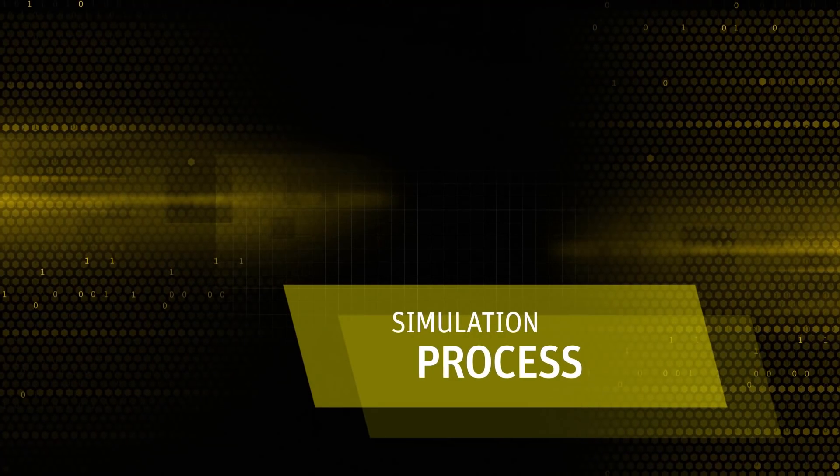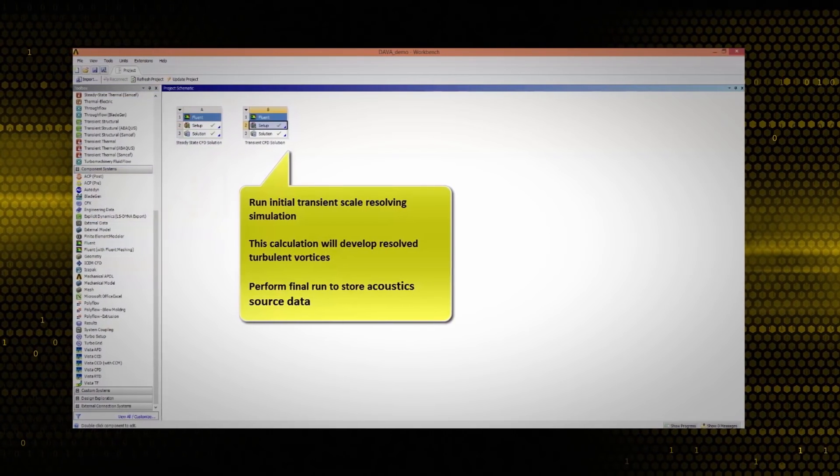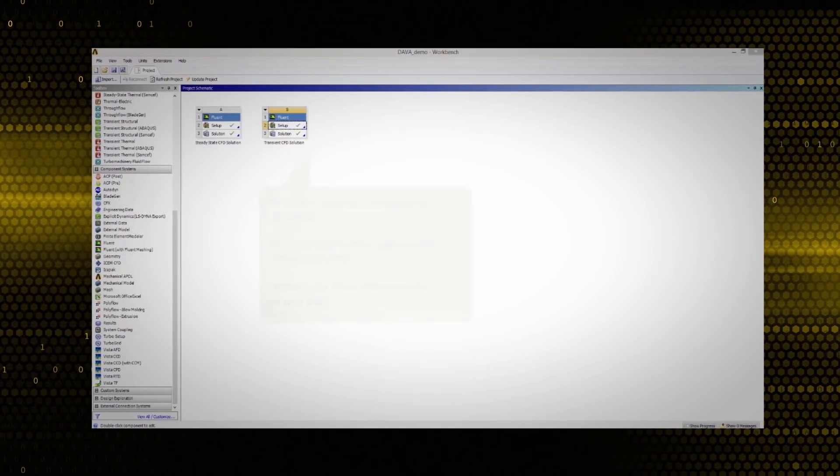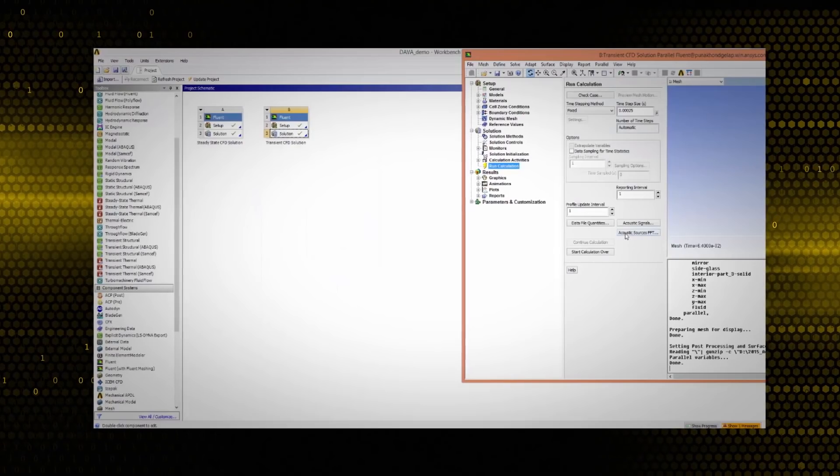What does the simulation setup process look like? You start with an initial steady-state CFD simulation, followed by a transient scale resolving simulation in which acoustic source data on the relevant surfaces of the auto body is extracted and stored. After the CFD simulation, the data needs to be transformed into the frequency domain.